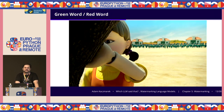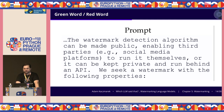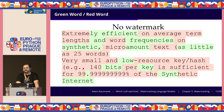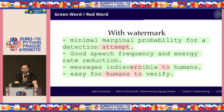The basic idea of watermarks is that we divide words into a green word list that we want to use and a red word list that we don't want to use. For a given prompt, we can generate text with no watermark, where on average half of the tokens are red and half are green. With a watermark, we get a significantly larger amount of green tokens.